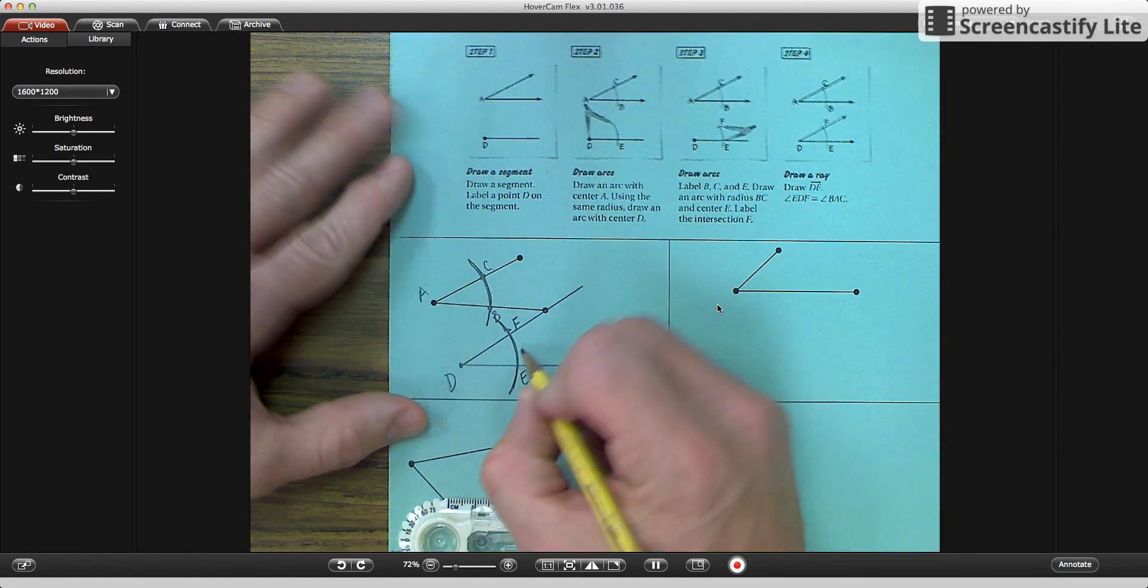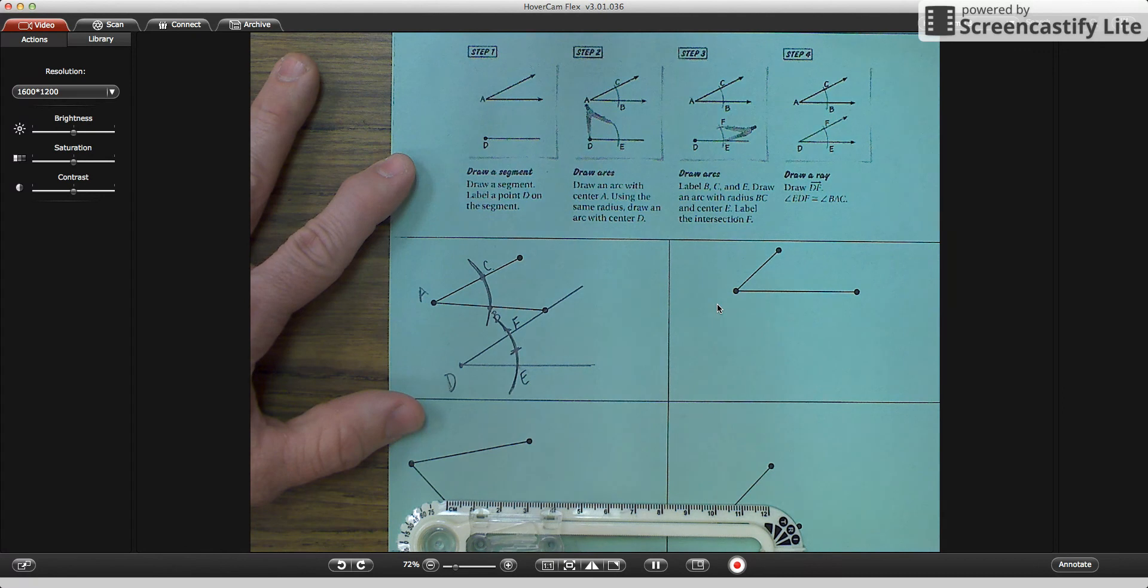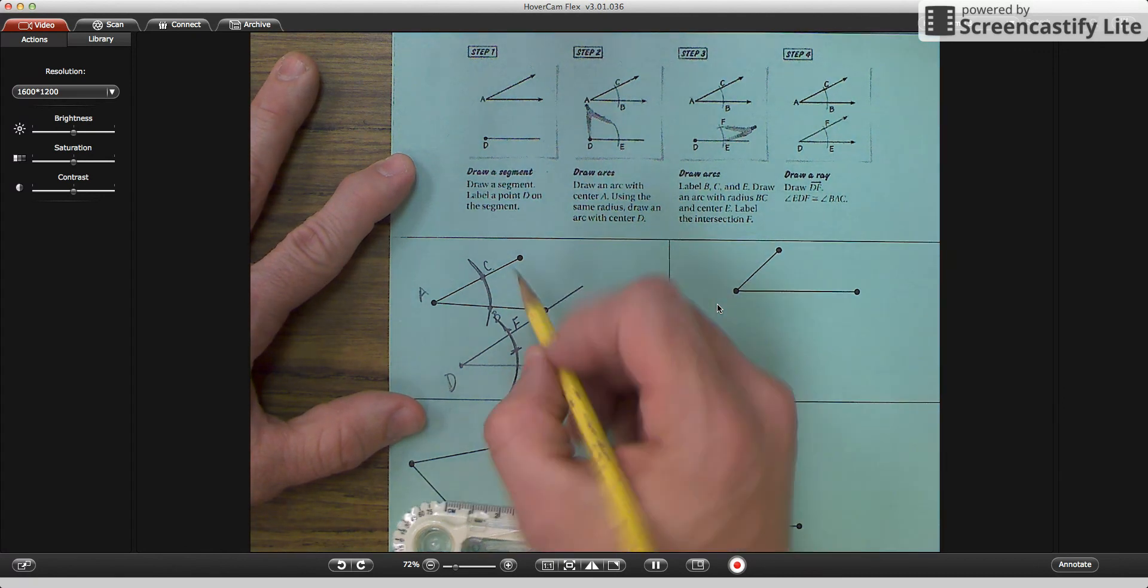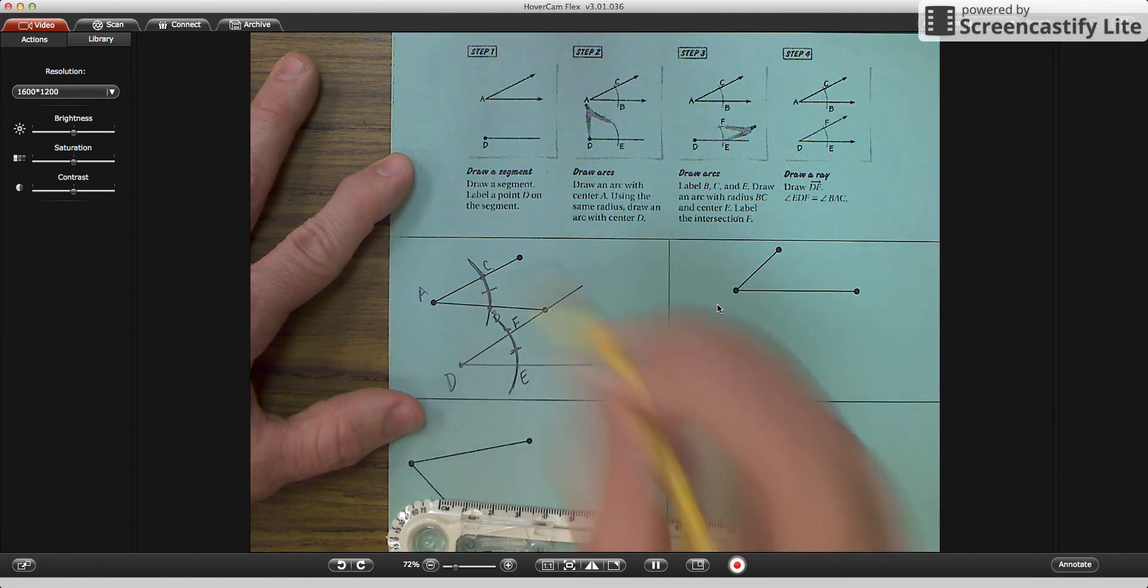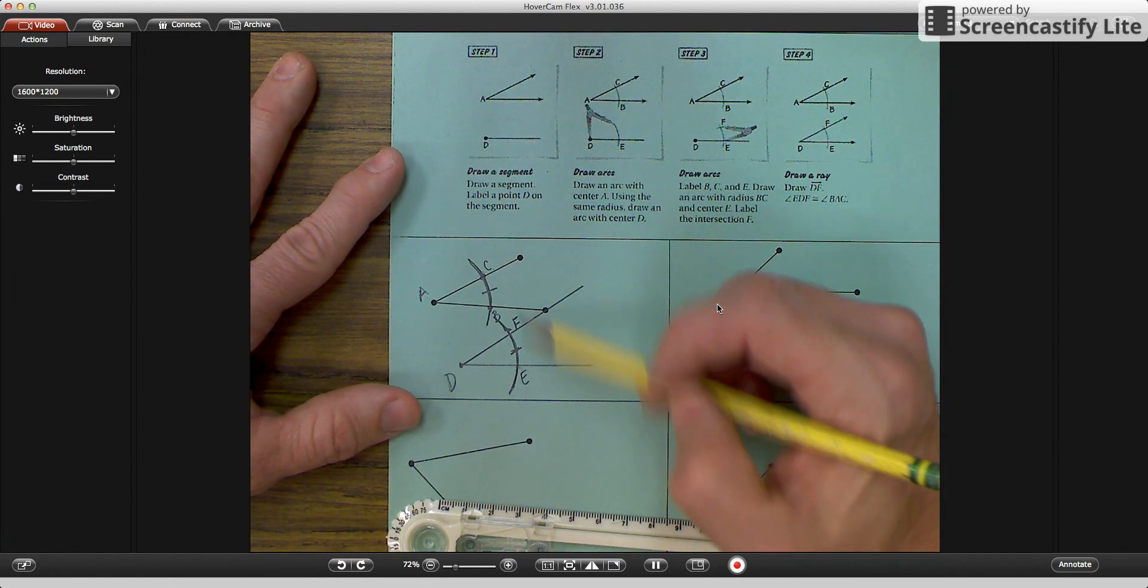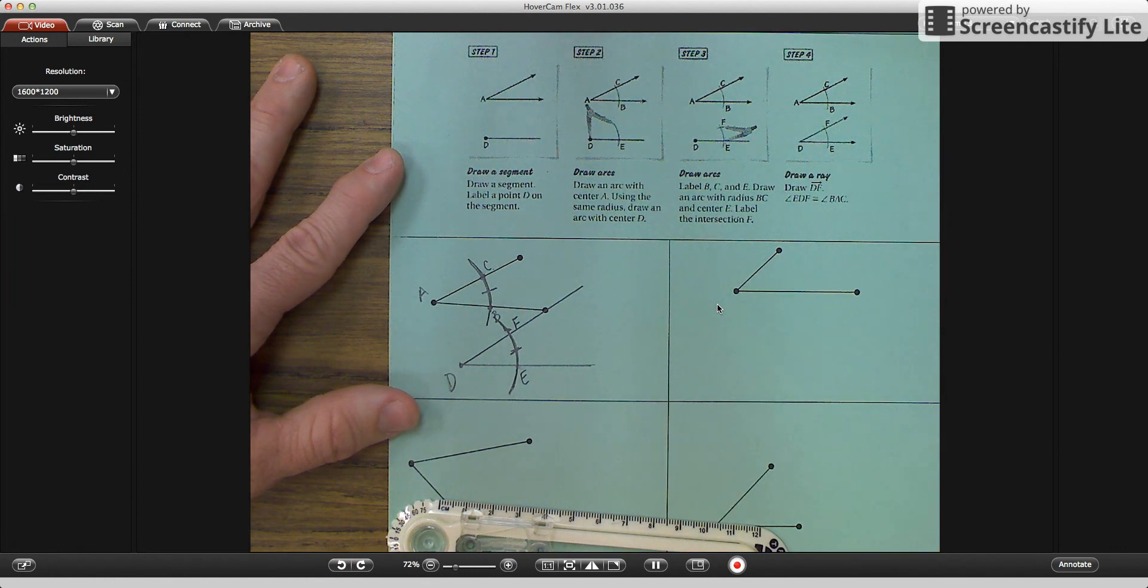And this arc, FE, is congruent to this arc, BC. So we have effectively copied that angle.